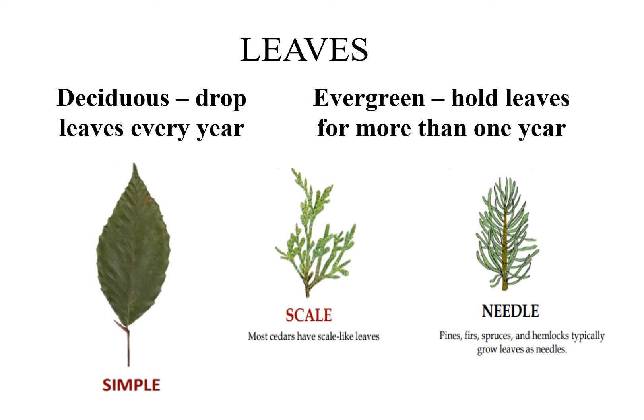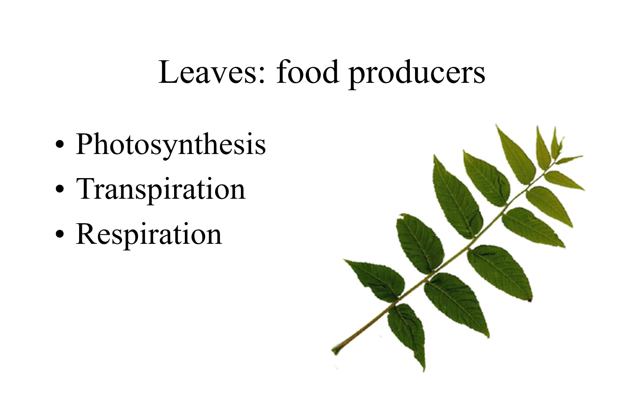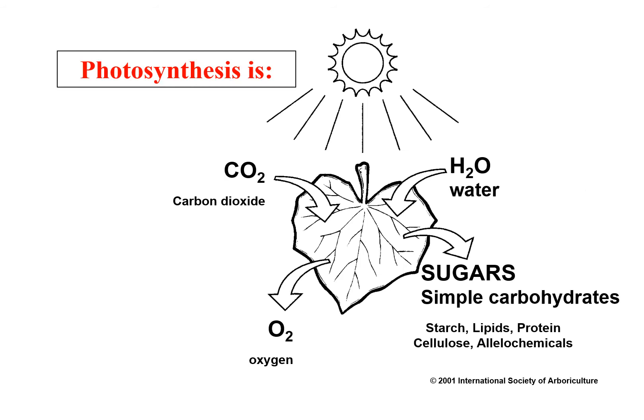Trees that lose their leaves every year are called deciduous. Trees that hold their leaves for more than one year are called evergreen. Needles and scales of conifer trees perform the same function as leaves of broadleaf trees. Leaves are the food producers of the trees. Leaf function includes photosynthesis, transpiration, and respiration.